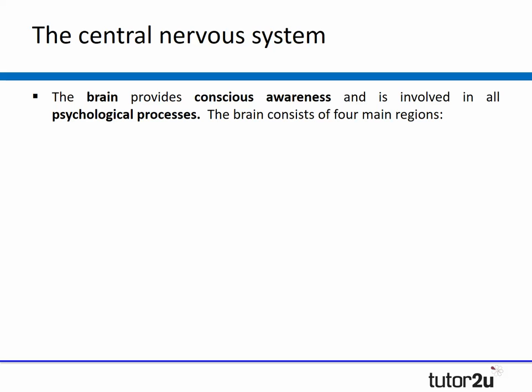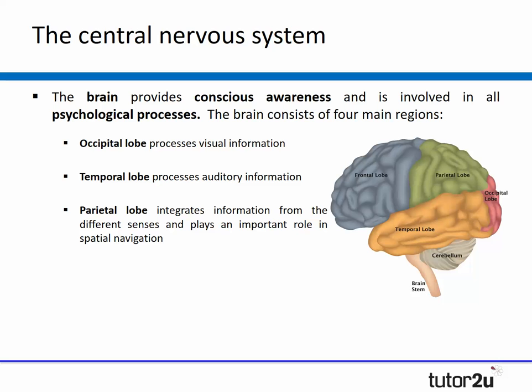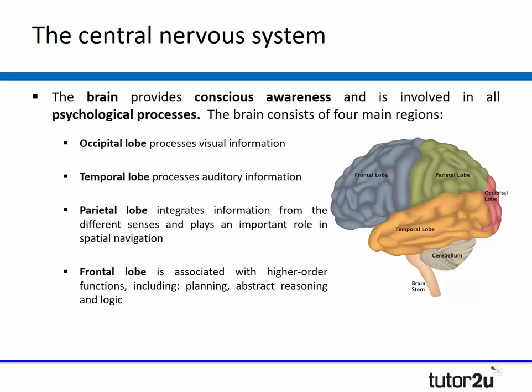The brain consists of four main regions, which you can see on screen. You have the occipital lobe at the back of the head, which processes visual information. You have the temporal lobes at the side, which process auditory information. You have the parietal lobe, which integrates information from the different senses and plays an important role in spatial navigation. And at the front you have the frontal lobe, associated with higher order functions including planning, abstract reasoning, and logic — arguably the part of the brain that makes us human.